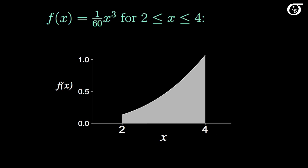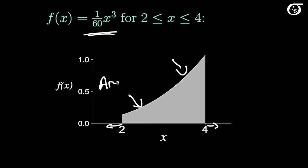Here's the probability density function plotted out. This curve is 1/60 times x cubed between 2 and 4, and then it drops to 0 outside of there. So f(x) is 0 outside of the interval 2 to 4. We chose the constant 1/60 to ensure that the entire area under that curve is equal to 1.